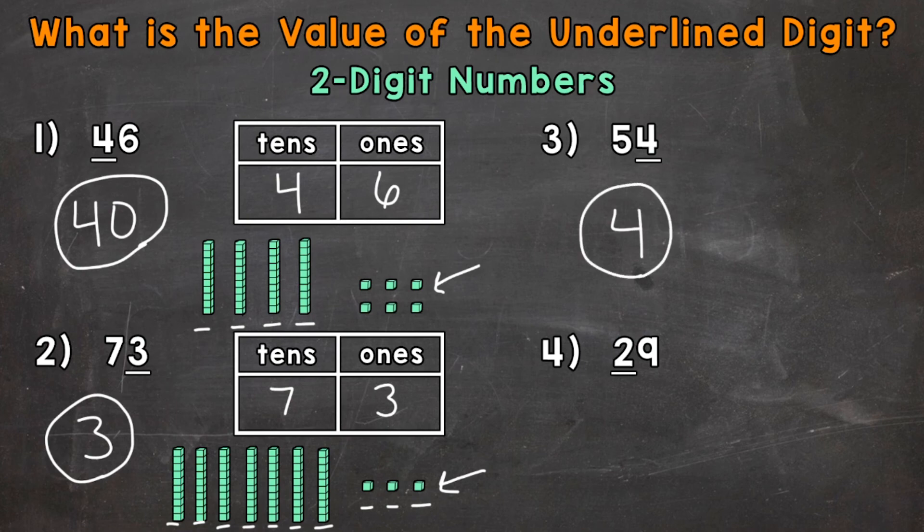And lastly, number 4, we have 29. So the 2 in the tens place is underlined. That 2 represents 2 groups of 10. So it has a value of 20. Because again, it's in the tens place and it represents 2 groups of 10. So the value of that 2 is 20.